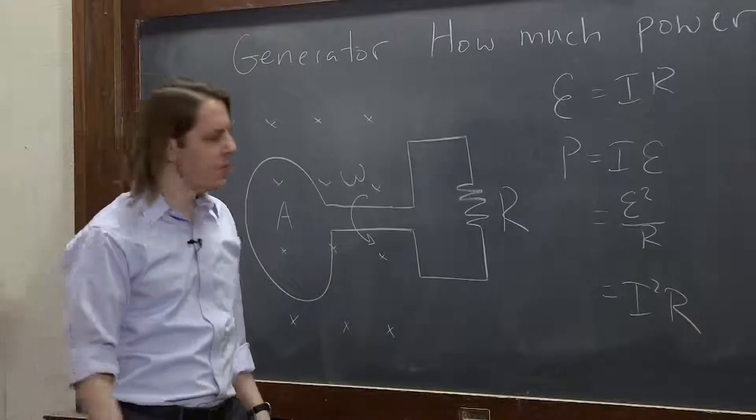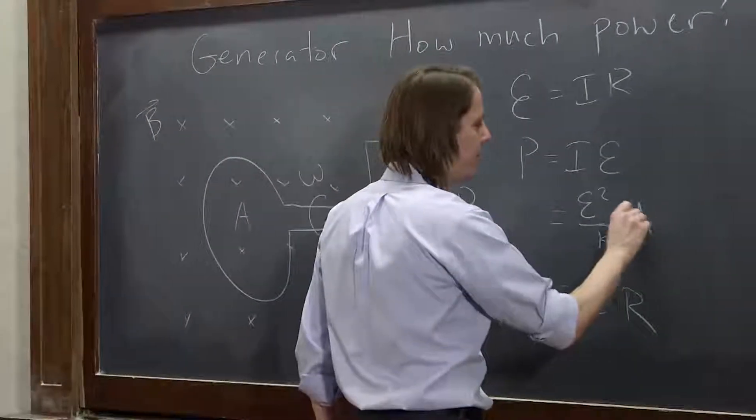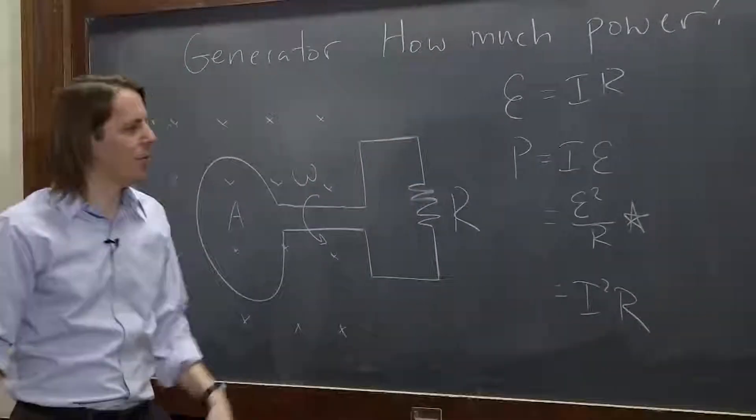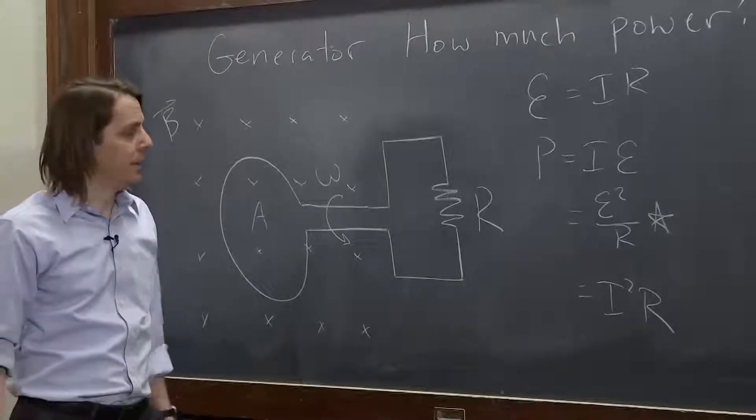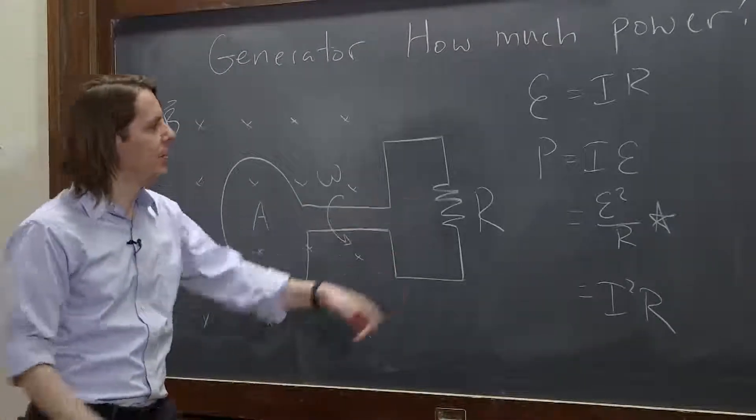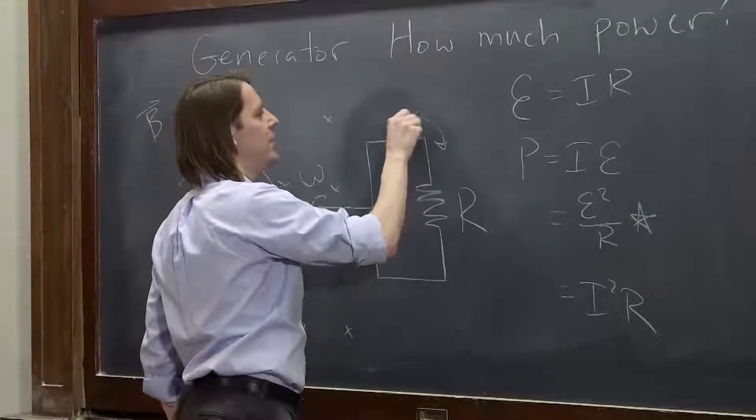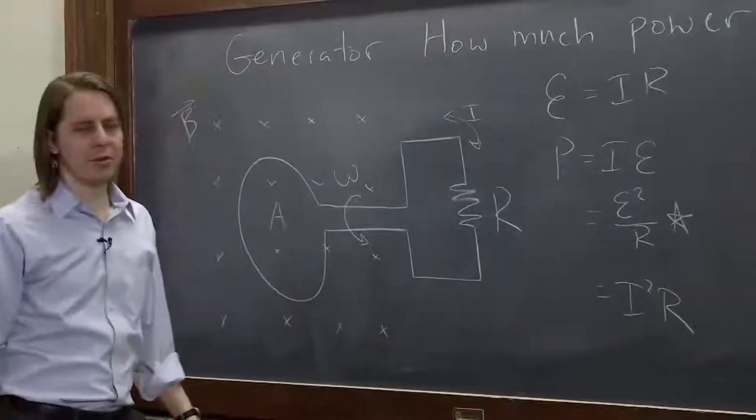It's usually good to use the one where you know all the parts. We haven't calculated the current before, we could. So let's just go with the EMF and the resistance that we were given, even though we could easily get the current if we wanted to.